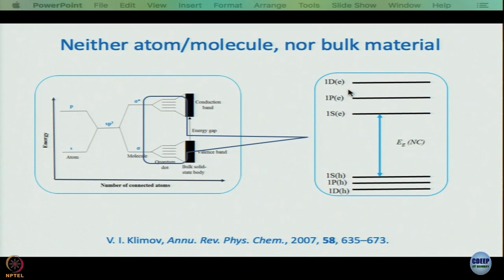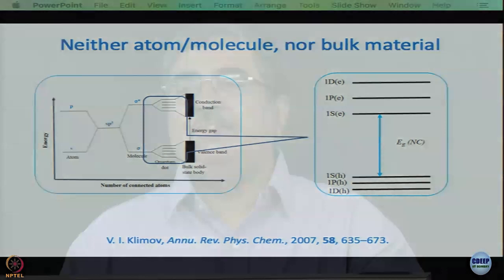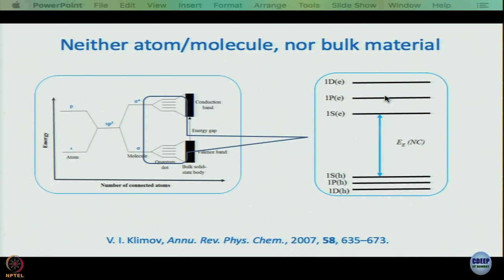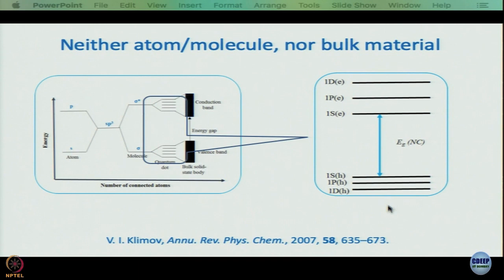What does this mean? When a transition occurs, an electron goes to a higher energy level and leaves behind a vacancy. The conduction band is occupied by electrons, and the vacancies left behind — called holes — are in the lower levels. When an electron goes to a higher energy level, the transition requires light of higher energy, shorter wavelength.